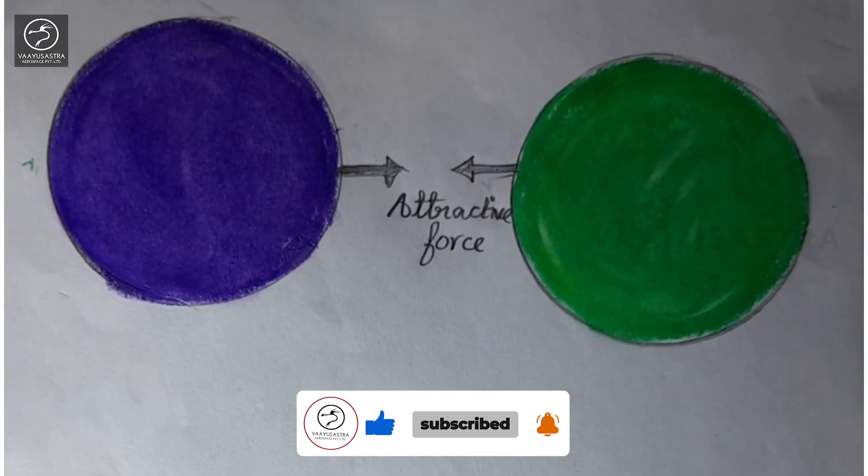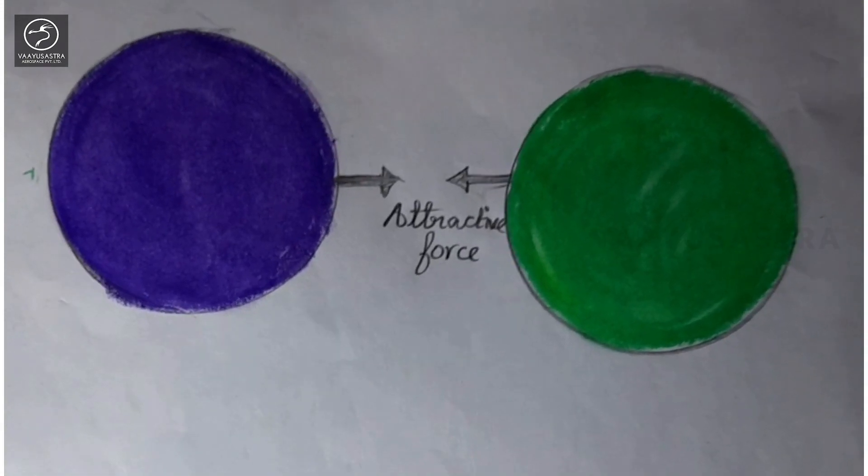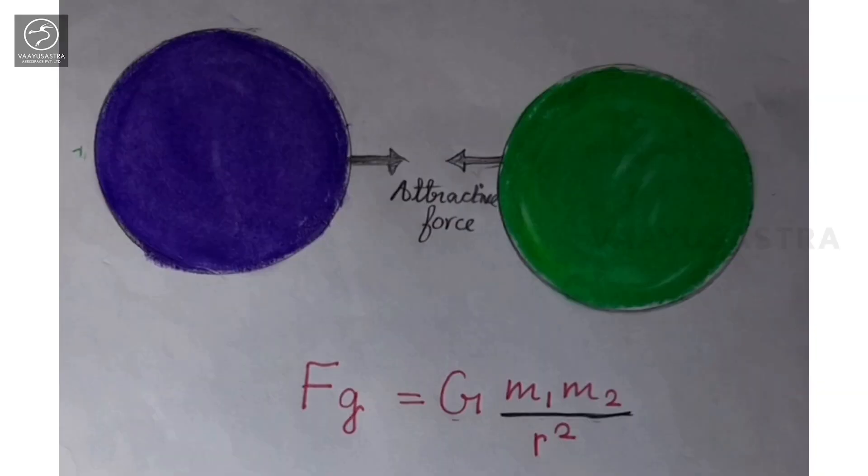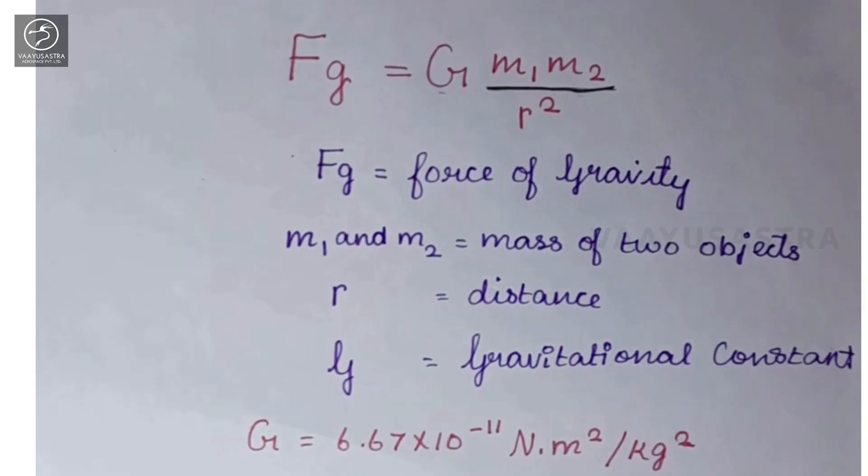Newton's law of gravitation can be expressed in an equation: Fg equals G multiplied by M1 multiplied by M2 divided by R square, where Fg is the force of gravity between two objects of mass M1 and M2, R is the distance between them, and G is the gravitational constant. The value of G is 6.67 times 10 power minus 11 Newton meter square per kilogram square.